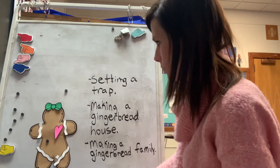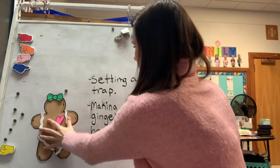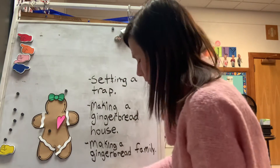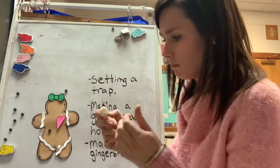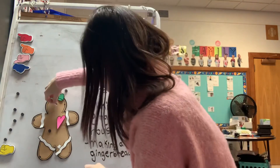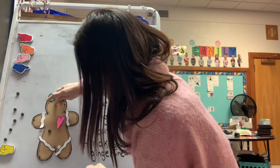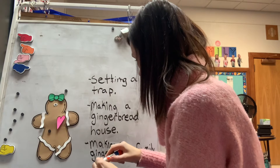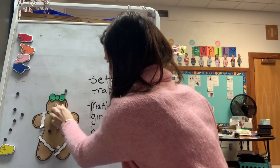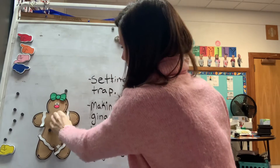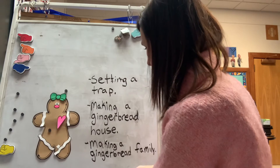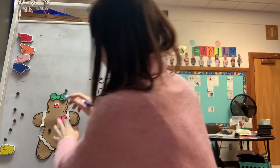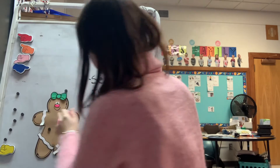We can't forget the gingerbread baby's face! You should have some little teeny beady eyeballs — they were very tricky to cut out — and glue them on your gingerbread baby. Then you have your gingerbread baby's nose, which is this hot pink oval. Put it right near the eyes. Then with a pencil, a crayon, or a marker, you're going to draw your gingerbread baby's face. I'm going to draw a smile on my gingerbread baby.